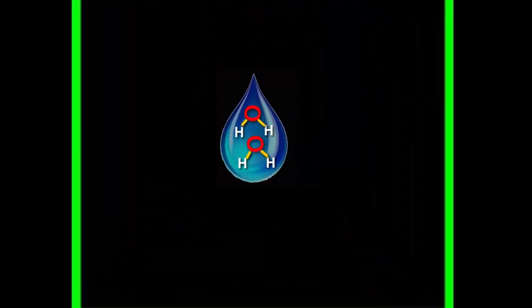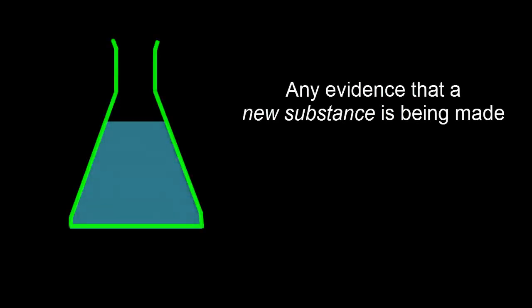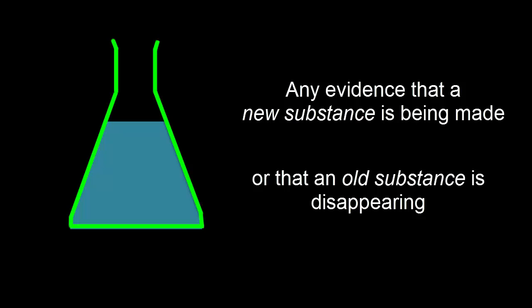But the molecules in chemical reactions are too small to see, so how can we tell if one's happening? Well, any evidence that shows that a new substance is being made, or that an old substance is disappearing, indicates that a chemical reaction is going on.